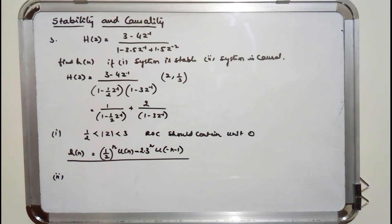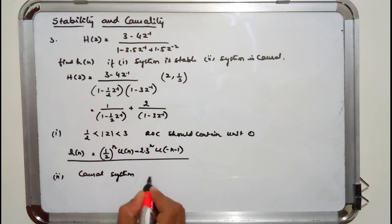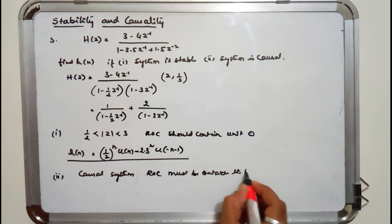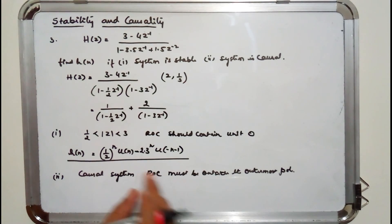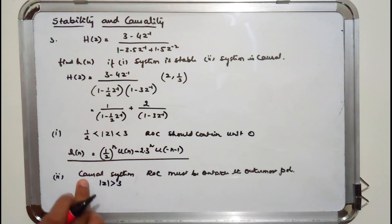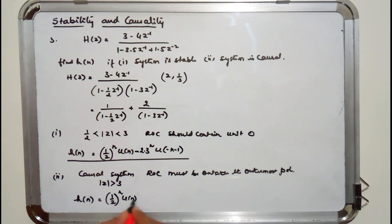For the second case — if the system is causal — the ROC must be outside the outermost pole. The outermost pole is at 3, so |z| > 3. For a causal system h(n) = 0 for n < 0, which is a right-sided sequence, so all terms use u(n). Therefore h(n) = (1/2)ⁿ u(n) + 2·(3ⁿ)u(n).